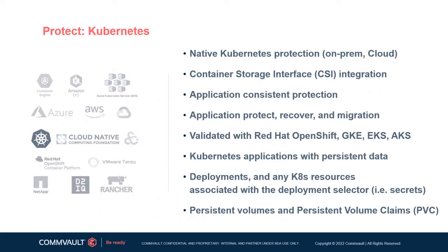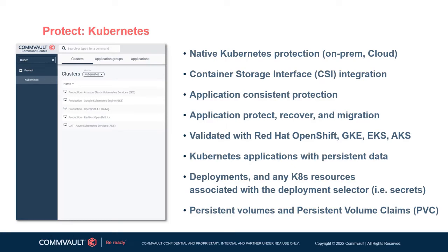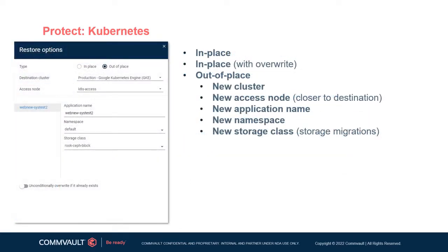With Kubernetes protection, data is protected for on-premises and cloud-deployed systems. The goal is the same as with virtualization — protection where application consistency and storage consistency is maintained. Given that most container-based systems are designed to be stateless, additional protection is needed for metadata, configuration information, and persistent volume data. Backups protect deployments, manifest files, kubeconfig files, secrets, configuration maps, as well as persistent volumes and persistent volume claims. Restores can be performed back into the original container or to a new cluster, and out-of-place restores can be used to migrate applications from on-premise clusters to cloud clusters, cloud-to-cloud, and managed cluster to cloud cluster.